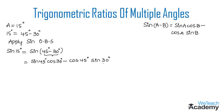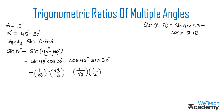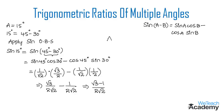Now let us substitute all the values of the trigonometric ratios. Sine 45° is 1/√2, cos 30° is √3/2, cos 45° is 1/√2, and sine 30° is 1/2. Simplifying: 1×√3 = √3, divided by 2×√2 = 2√2, minus 1×1 = 1, divided by 2√2. Since the denominators are the same, we get (√3 - 1) / (2√2). So this is the value of sine 15°.